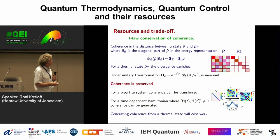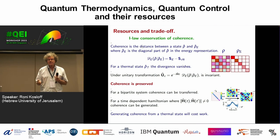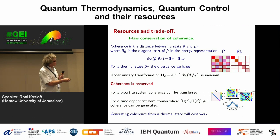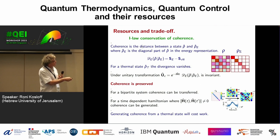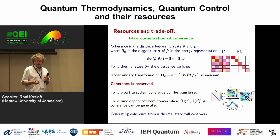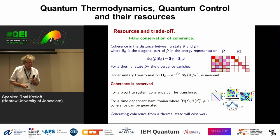I want to use this divergence to define what I call coherence. The definition I use is the divergence between the state of my system and its energy diagonal — I erase all the off-diagonal elements to get the diagonal part, and the distance between these two states defines the coherence. It's not the only definition, but all of them give the same result I want to show.